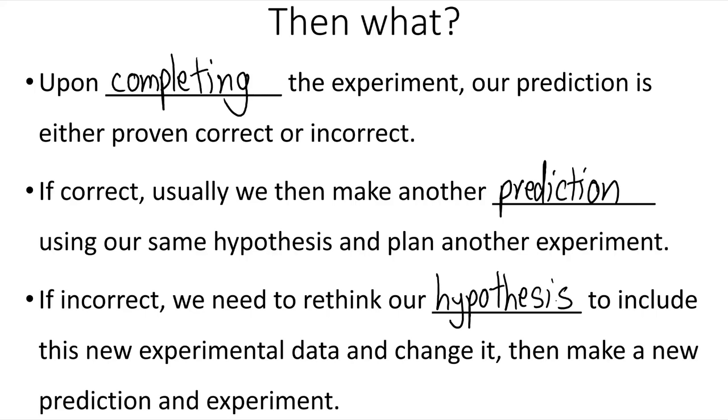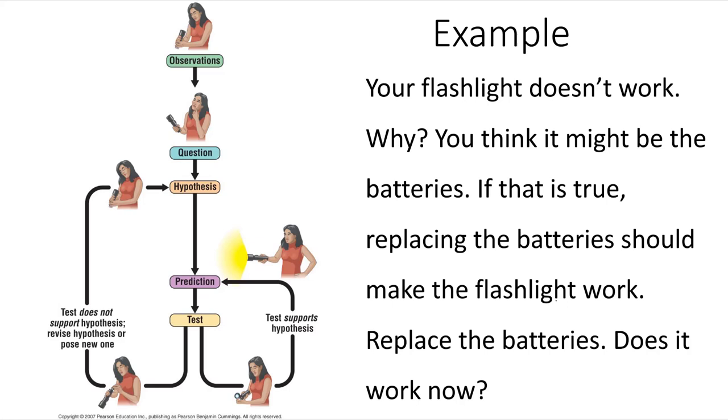As a very simple example of the scientific method, imagine you have a flashlight, and you turn it on, and it doesn't work. That's your observation. The flashlight isn't working. Your question is, why? Based on what you already know about flashlights, they normally need a power source. You think, maybe it's the batteries. That's a common reason why flashlights won't work. Your prediction, if your hypothesis is that your flashlight isn't working because of the batteries, would be: if we change the batteries and turn the flashlight on, then it should work.